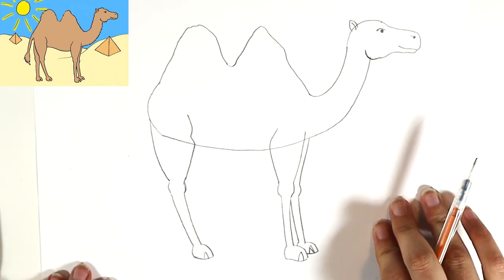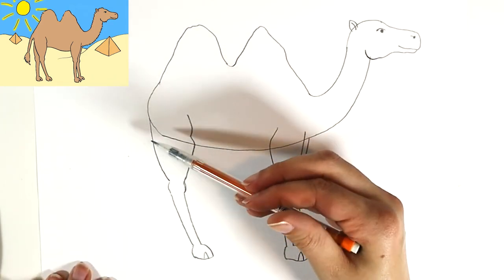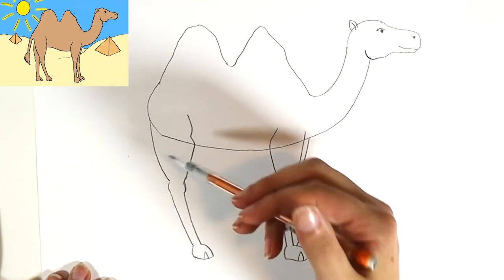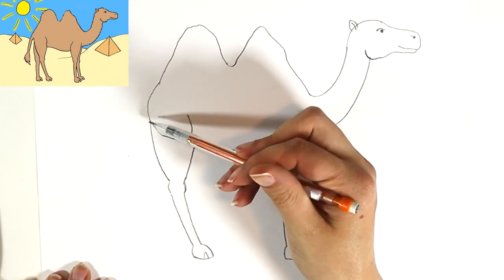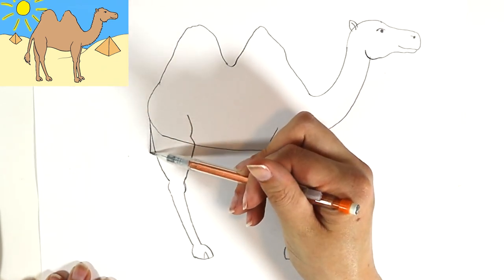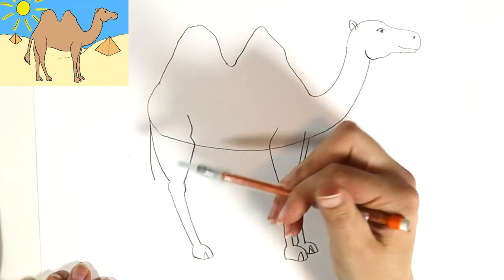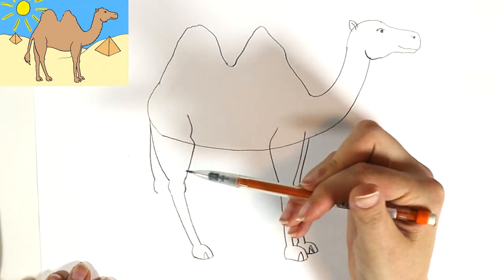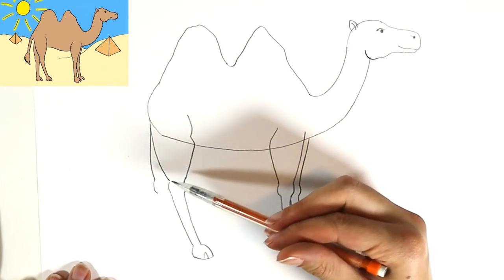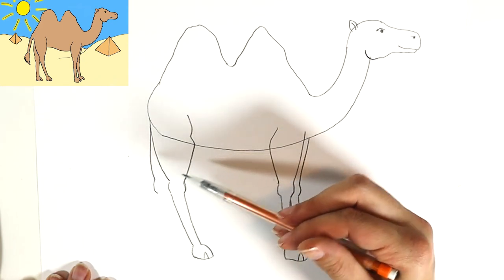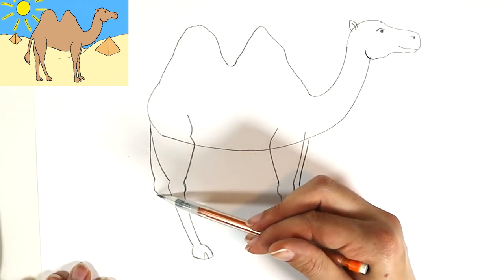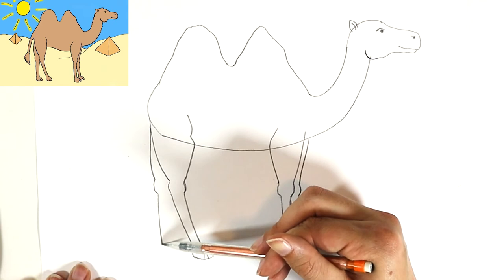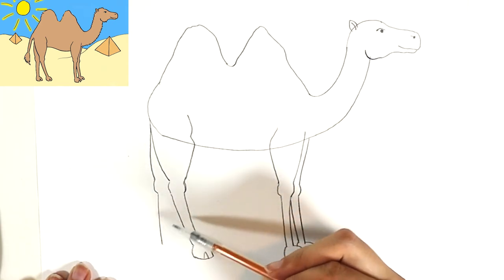There we go. And this back one, the other leg is going to be more straight. Where this one's going this way, the other one's going to go straight up and down. So starting right where this one started, I'm going to do a curved line that kind of stops at the same spot, a bump for the knee. We don't see the other side of the leg yet because it's too close.